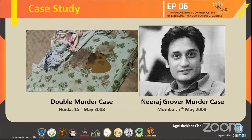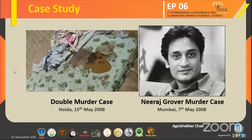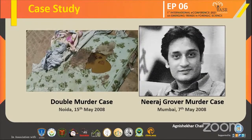In the second CBI investigation set up in 2009, it was suggested that the culprits were Aarushi's parents, Dr. Rajesh Talwar and Dr. Nupur Talwar. However, on 12th October 2017, both were set free due to lack of evidence. In this case, the ex-DSP of Noida, Mr. KK Gautam, visited the crime scene, examined a few locations, and later gave a statement to the CBI.